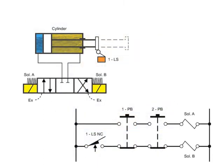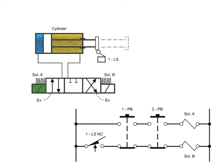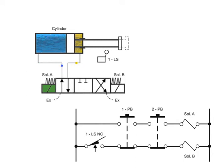In this circuit, a double-solenoid, three-position valve is connected to a cylinder, which actuates a limit switch.